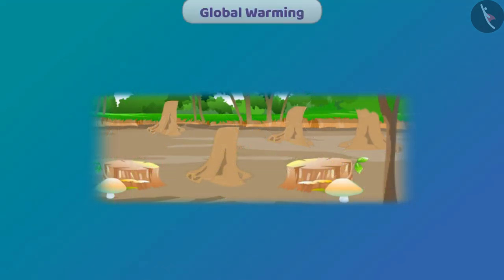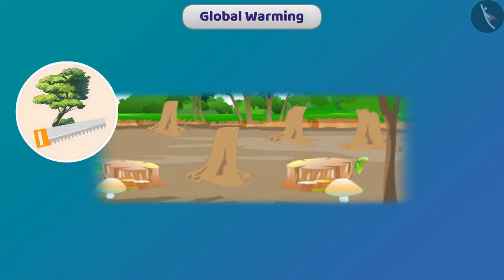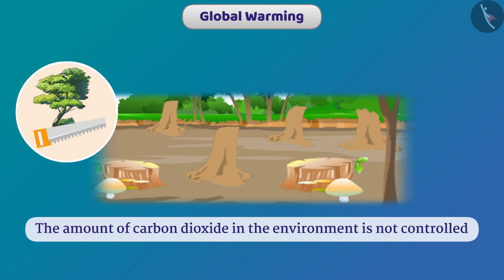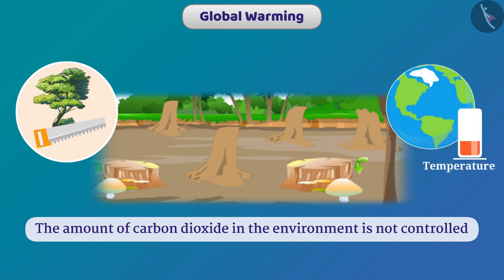Our activities are causing huge loss to forest resources. Due to deforestation, there are many problems — the amount of carbon dioxide in the environment is not controlled, due to which the temperature of the earth has started to rise. We call this problem global warming.